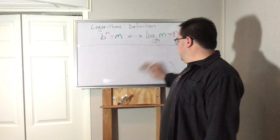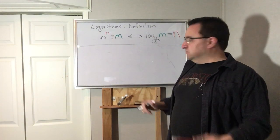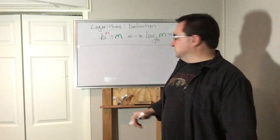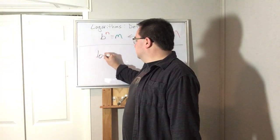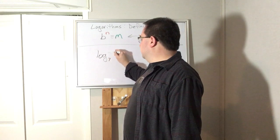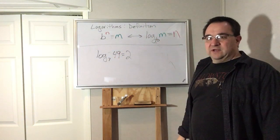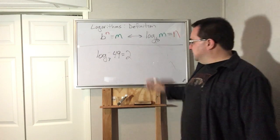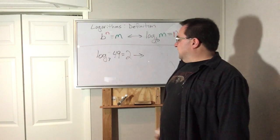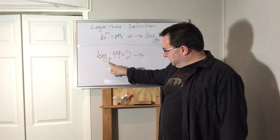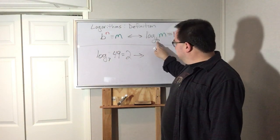So let's go the other way. How do you rewrite it if I go in reverse? What if I give you a logarithm first? Let's say log base 7 of 49 equals 2. How would I write that normally as an exponential equation? Well, this number is the base.